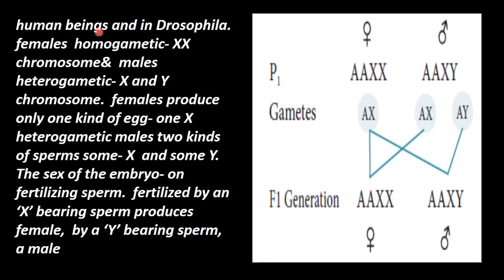In human beings and Drosophila melanogaster, females are homogametic with X-X chromosomes. Males are heterogametic with X and Y. Females produce only one kind of egg with one X, whereas heterogametic males produce two kinds of sperm: one having X chromosome, another having Y chromosome.